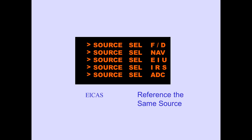The EICAS advisory message, source select, is displayed if the Captain and First Officer reference the same source.